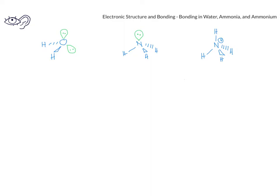We also want to review the general structures of water, ammonia, and the ammonium ion, because these are three structures that we'll encounter quite a bit when we study organic chemistry, especially when we're studying organic compounds in aqueous solutions. Each of these species is sp3 hybridized, because each species has four electron domains around the central atom. In the case of ammonia, each of these electron domains is a bonding pair of electrons, because there are four hydrogens around the central nitrogen atom. In contrast, in water, there are two lone pairs of electrons and two bonding pairs of electrons around the oxygen.